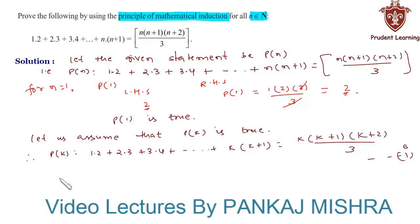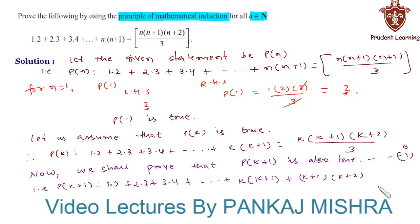And now in our final step, the generalization step, we shall prove that P(k+1) is also true. That is, P(k+1) is such that 1·2 + 2·3 + 3·4 and so on up to k(k+1) + (k+1)(k+2).